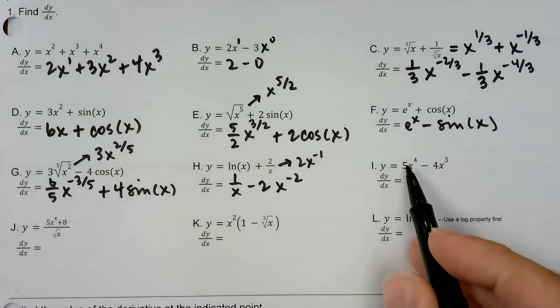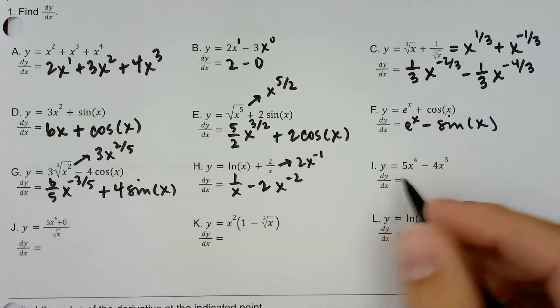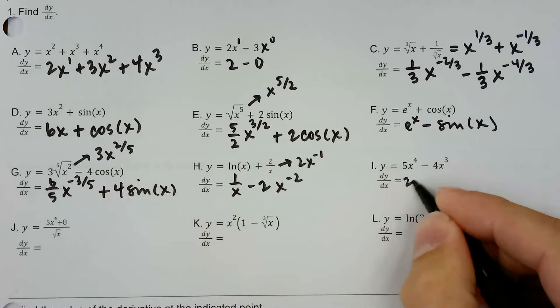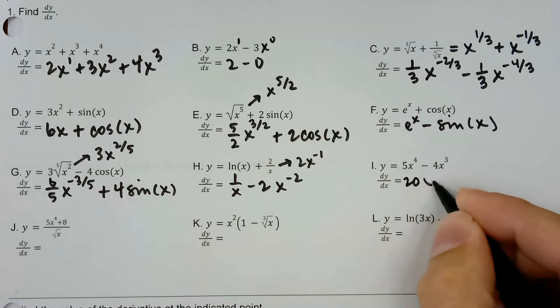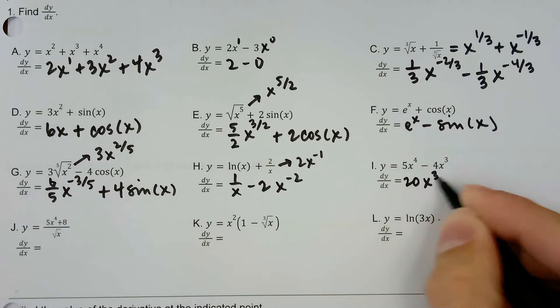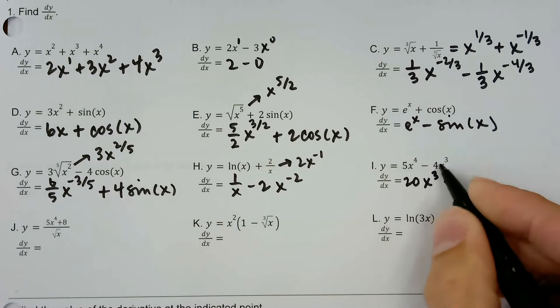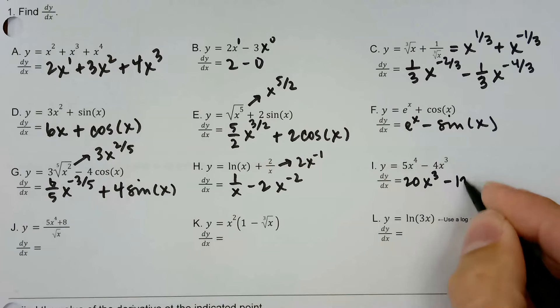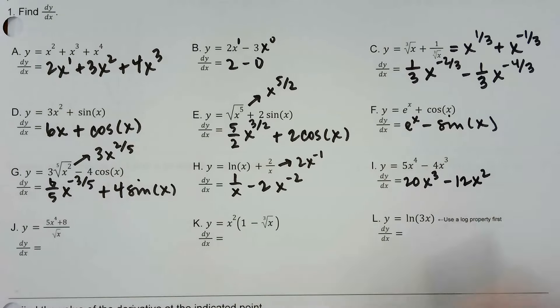Back to the derivative power rule — this is a nice looking polynomial. Four times five is 20, x to the three, minus three times four is 12 x to the two.